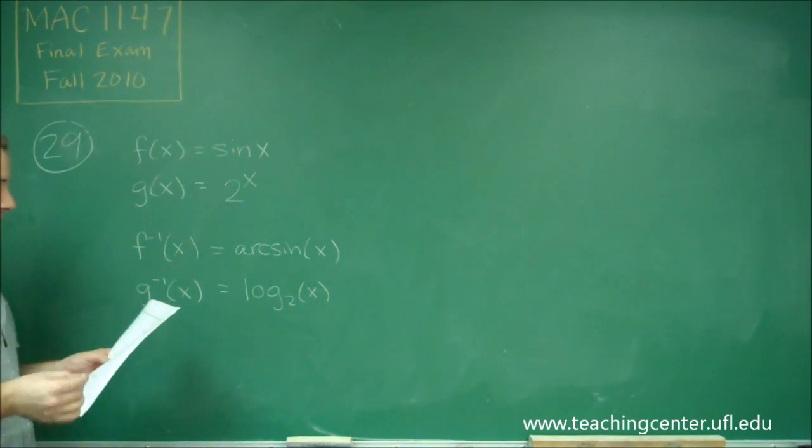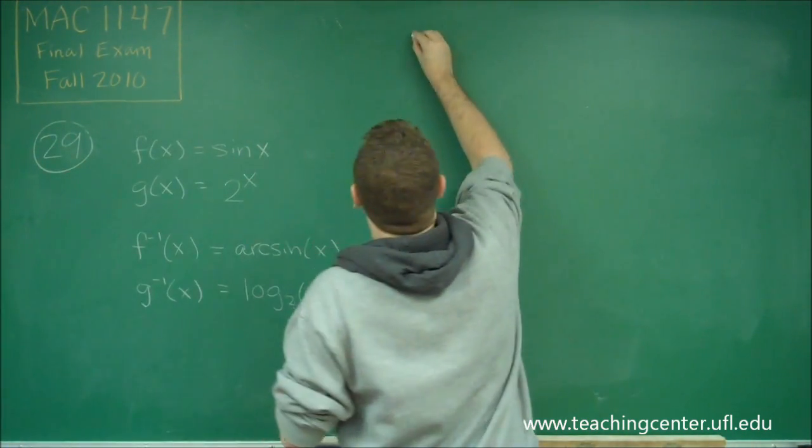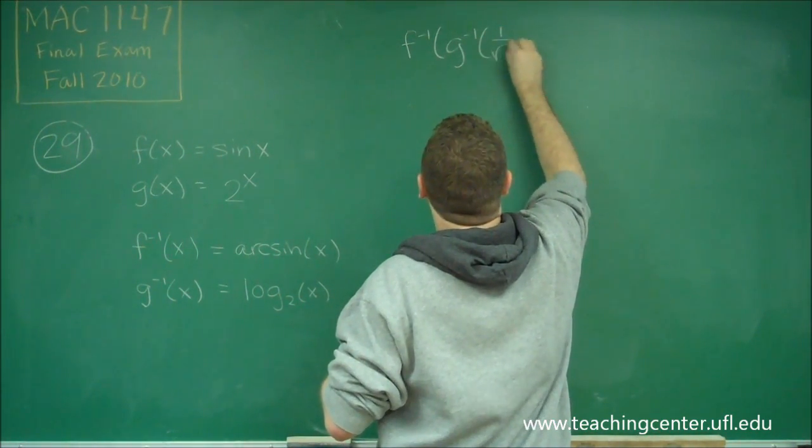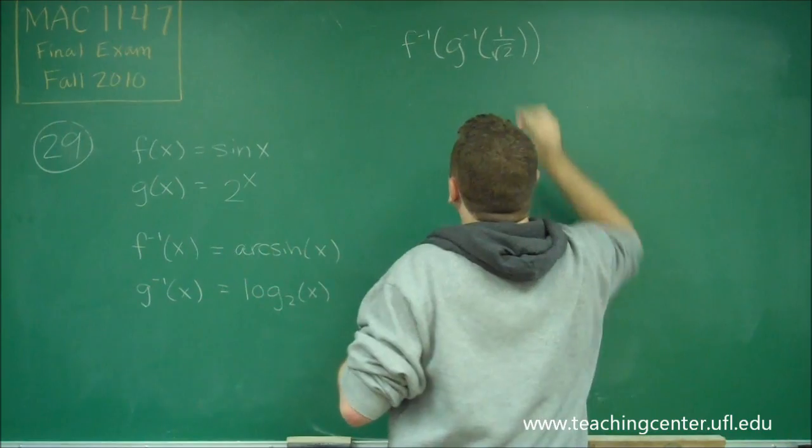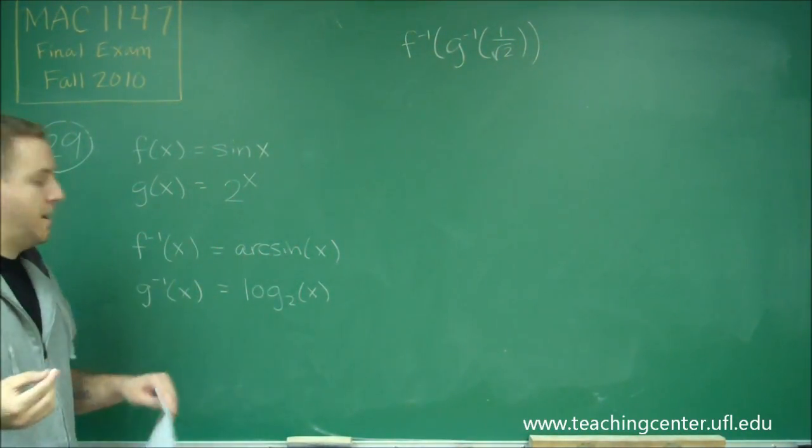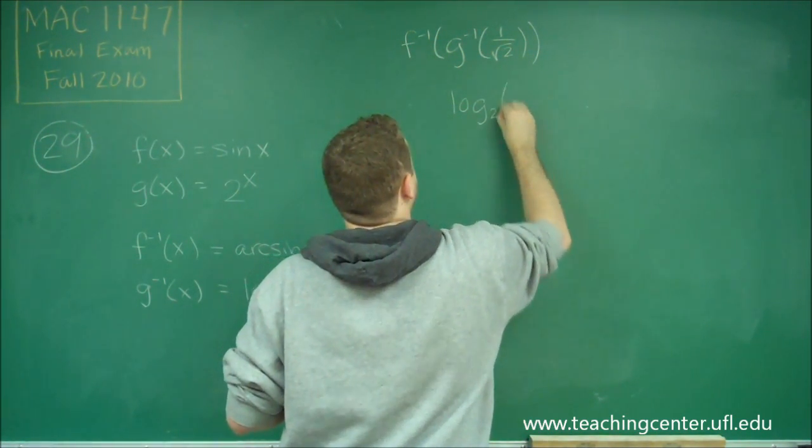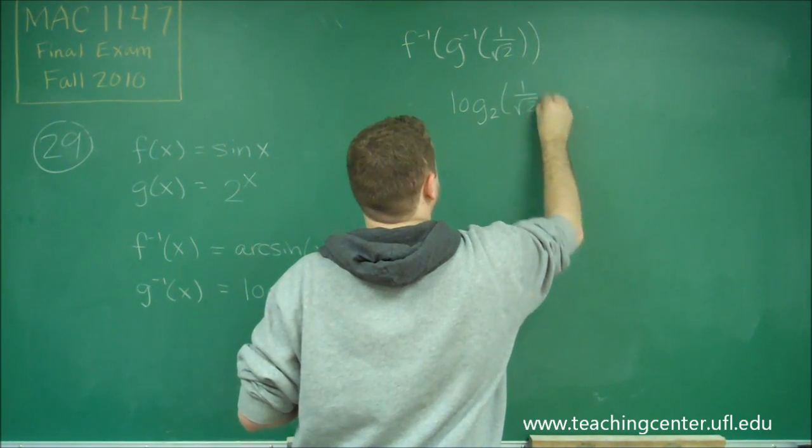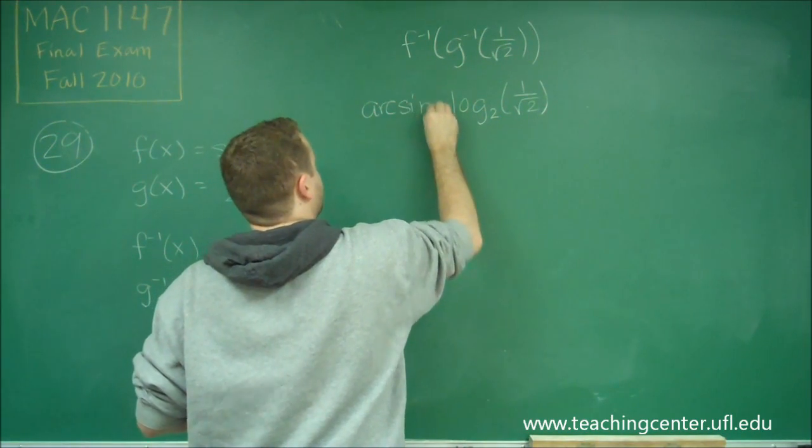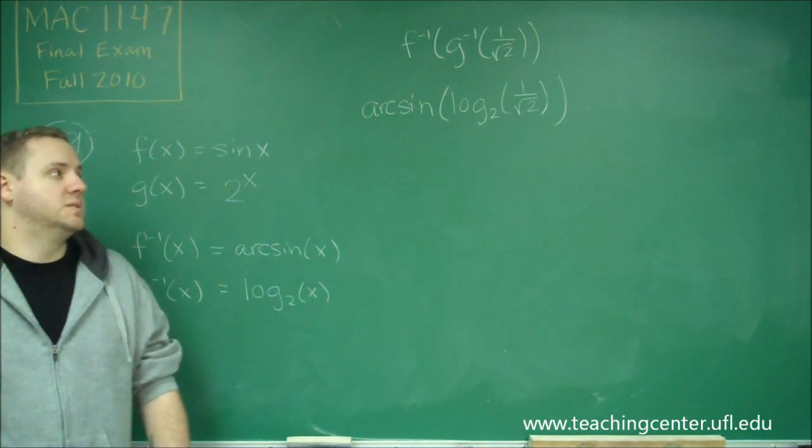And we need to do f inverse of g inverse of 1 over root 2. So let me write that out. So we're doing f inverse of g inverse of 1 over square root of 2. So we just need to evaluate that. So let's plug our functions in. So we're taking log base 2 of 1 over square root of 2, and then we're doing arc sine of that entire thing.